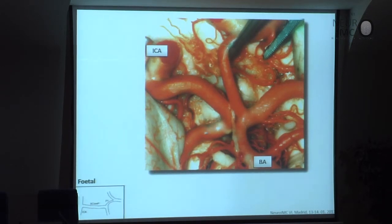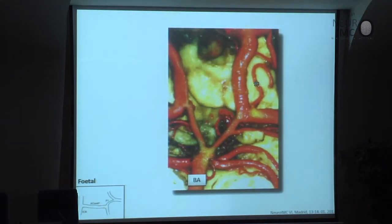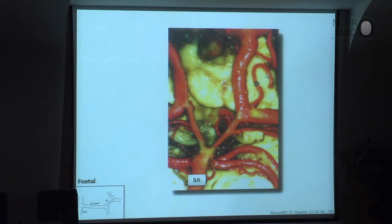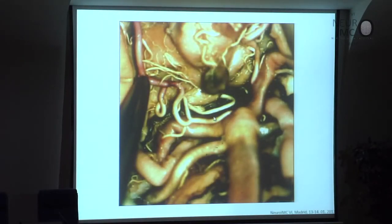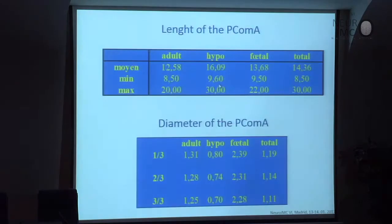As we can see, the P2 segment of the posterior cerebral artery directly emerges as a continuity of the posterior communicating artery in the fetal type. Once again, we see a PCOM with important diameter continuing into the P2 segment. What is interesting here is that the premammillary artery emerges from this P2 segment. This is a very rare and unique case of an anomaly where the posterior cerebral artery bifurcates at the end and gives two branches going into the P1 and P2 segments — this has not been previously described.